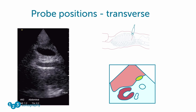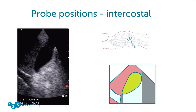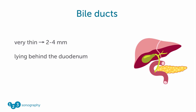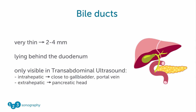Turning the probe counterclockwise 90 degrees gives you a transverse image of the gallbladder. Most patients are not able to inhale maximally, so the intercostal view gives you a nice view onto the gallbladder, the portal vein, and the adjacent bile duct lying close to the portal vein. The bile ducts are normally very thin, having a diameter of 2 to 4 millimeters, lying partially behind the duodenum. You can only see them in transabdominal ultrasound in the intrahepatic part lying close to the gallbladder and portal vein, and sometimes in the extrahepatic part in the pancreatic head.